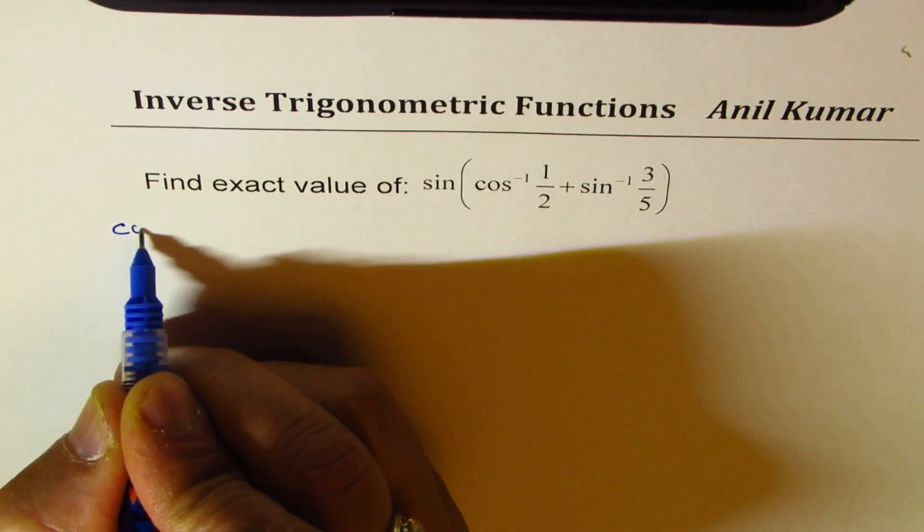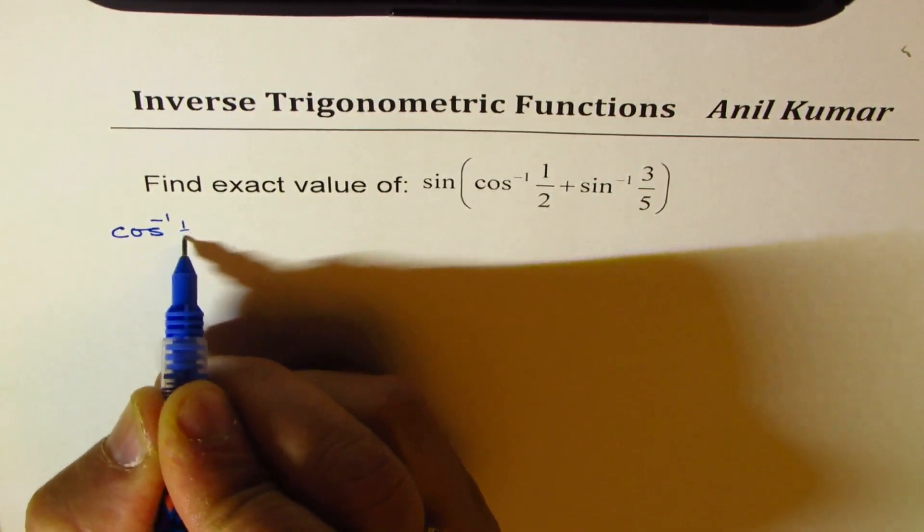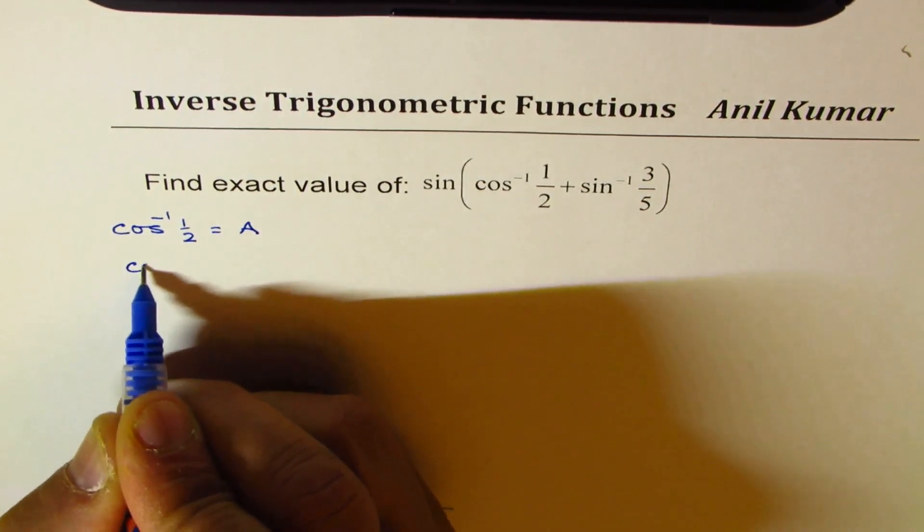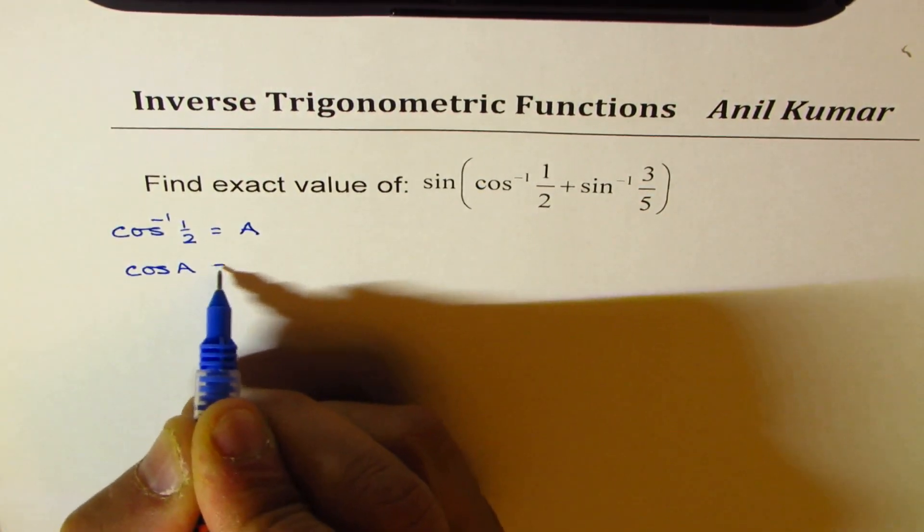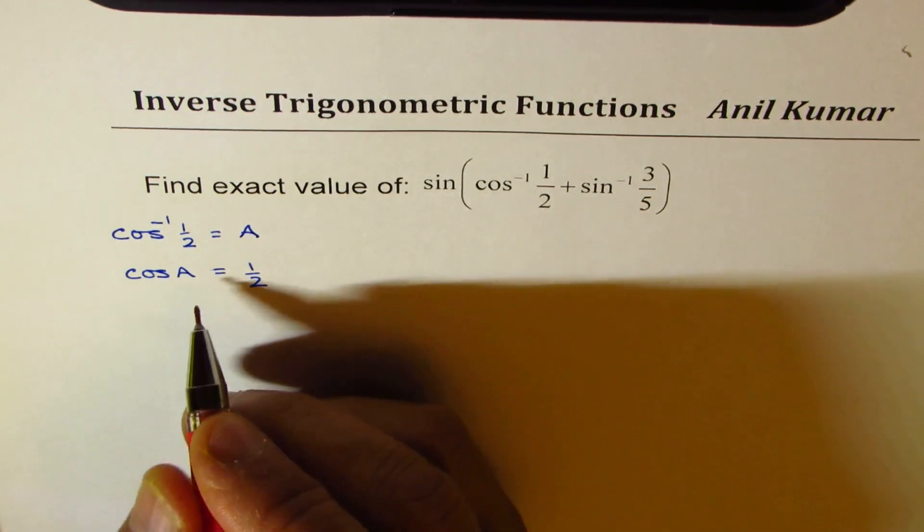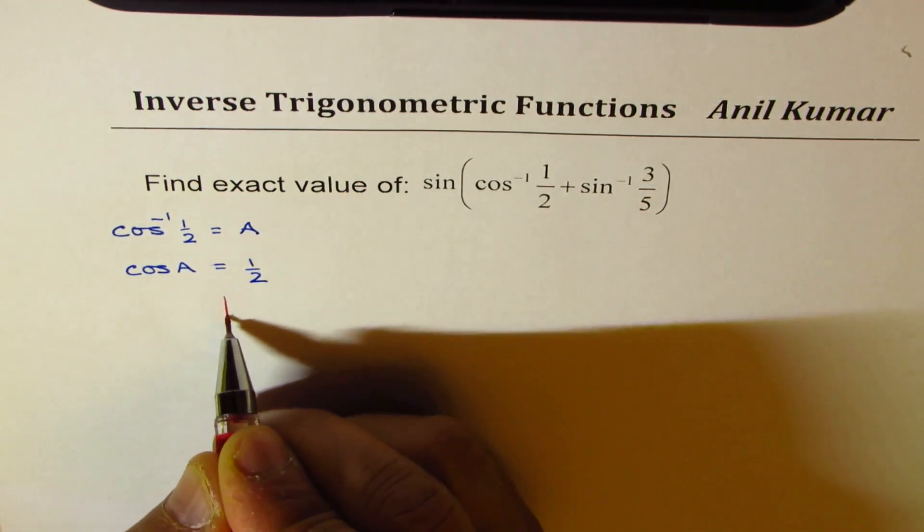So let us say that cos inverse half is equal to A. In that case, cos A is equal to half. Now if cos A is half, then what is sine A? That is what we need to figure out.